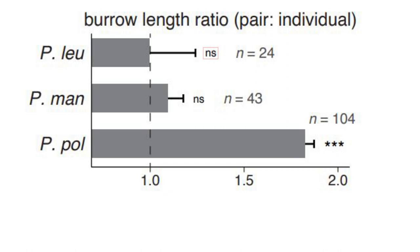we found that P. polionotus pairs cooperatively constructed burrows that were nearly twice as long as those built by individuals, and that opposite-sex pairs dug longer burrows than same-sex pairs.